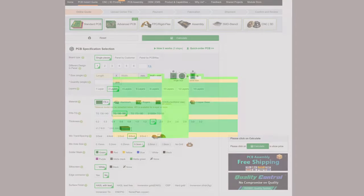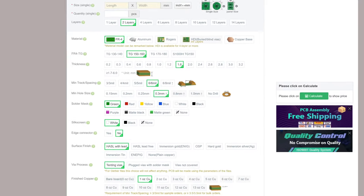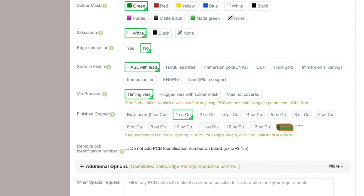Vias plug with solder mask is the process to prevent the solder ball from popping out to cause a short circuit during wave soldering and avoid flux residue in the via hole. Generally, if the board has a BGA or IC assembly, it is necessary to select the mask plug vias.